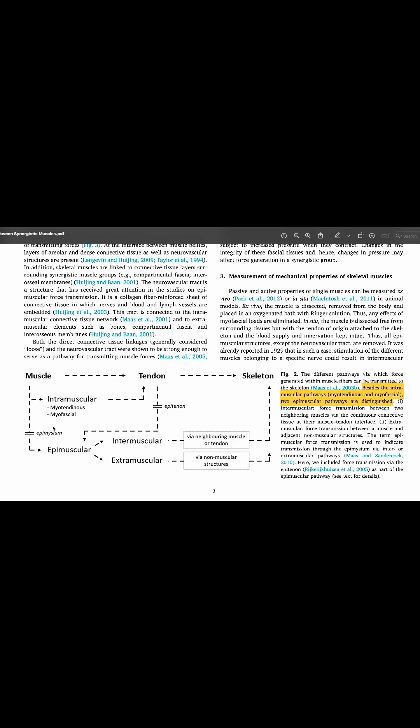Then we have the epimysium, which is essentially the connective tissue that's enveloping muscle fibers. And that is going to part into the epimuscular connective tissue. And then this is going to be broken down into intramuscular and extramuscular. So with intramuscular, we're still staying within muscle tissue or tendon. And this is going to essentially be adjacent structures that are going to help transmit force. We'll see an example of that in a minute here with the gastrocs and the soleus.